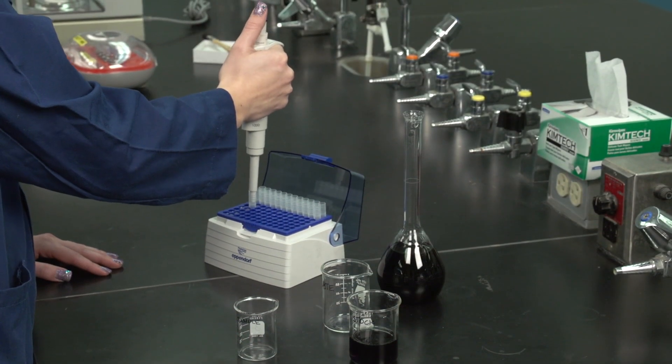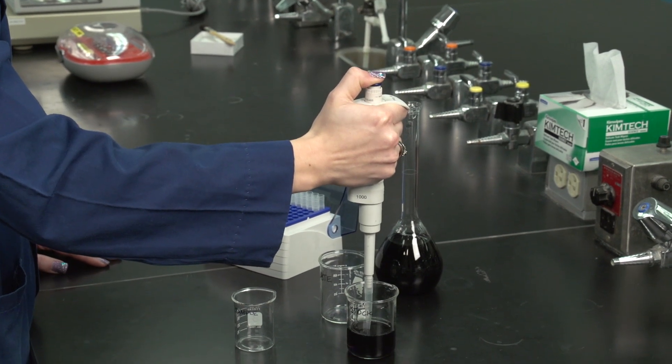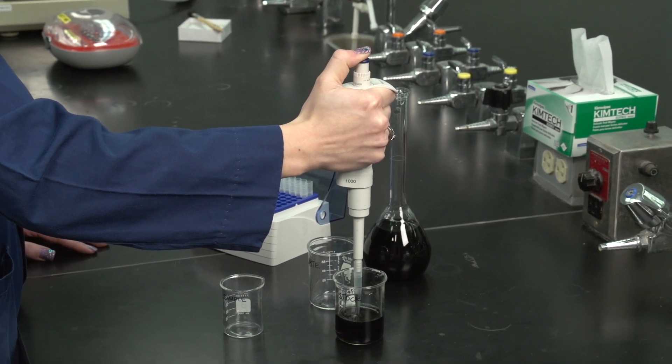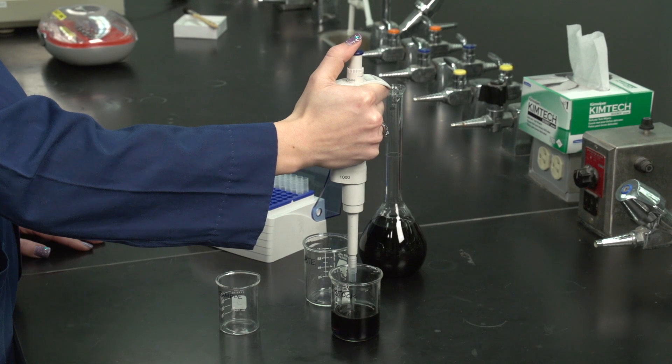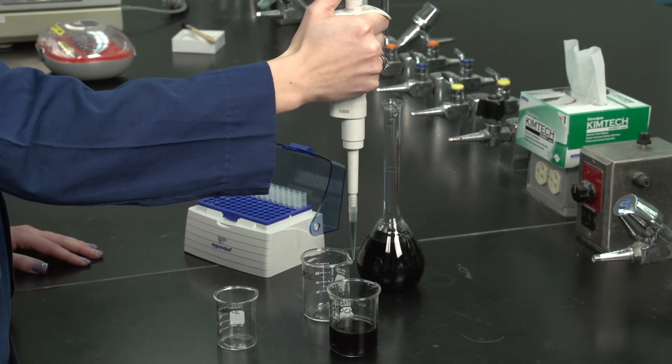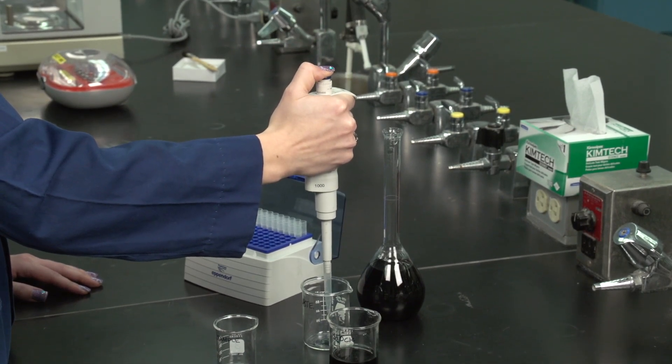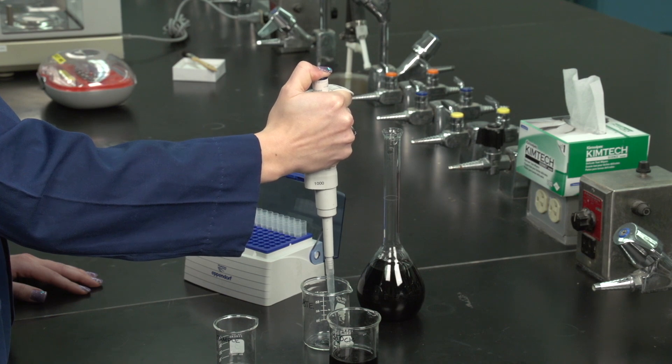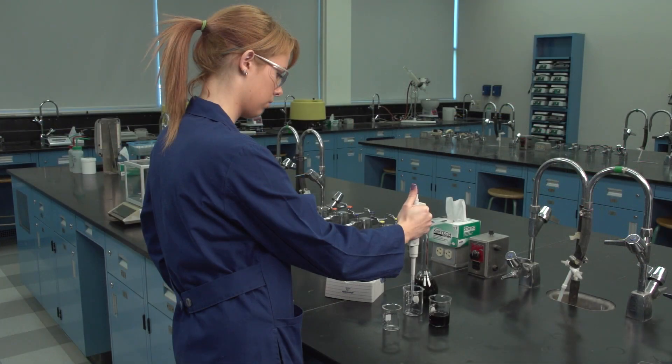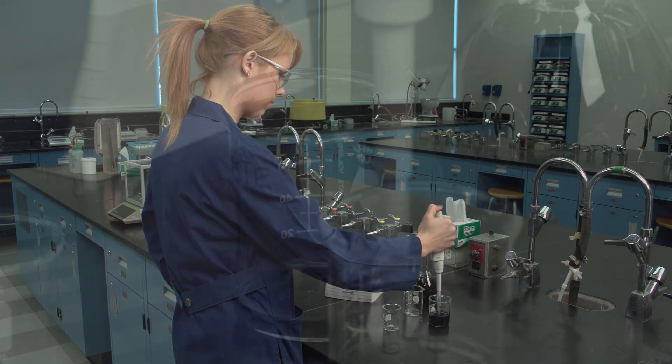Rinse the pipette at least three times with the sample. Depress the plunger to the first stop, then return it to the initial position without allowing the plunger to snap back. Withdraw the tip from the solution and dispense the rinse by pressing the plunger to the first stop. Wait until the liquid stops flowing, then press down the plunger to the second stop. The rinsing procedure is identical to the micropipette procedure, but the rinses are discarded.